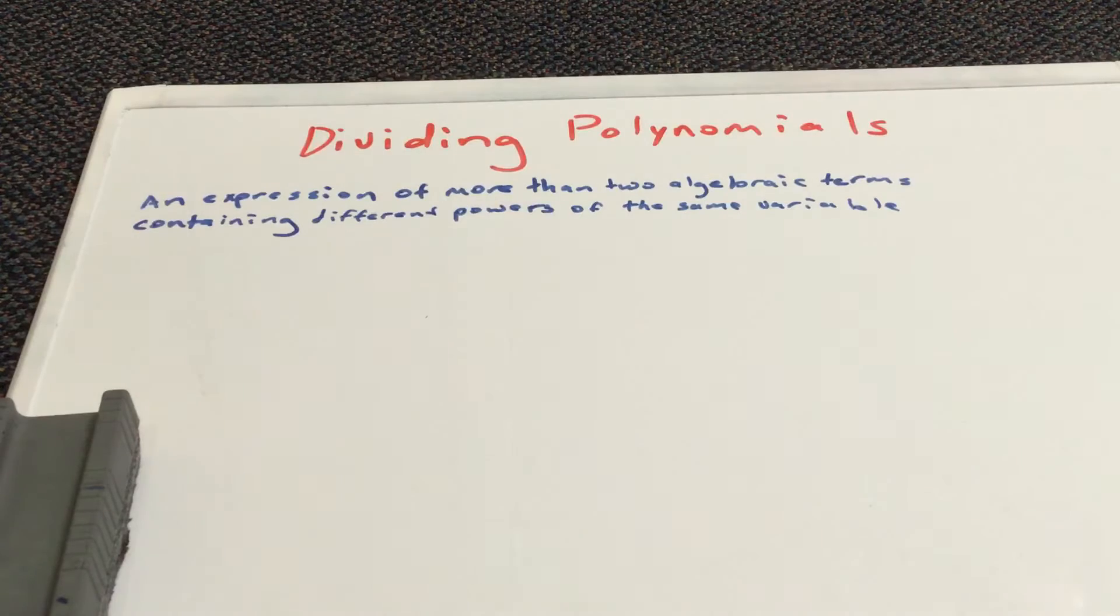A polynomial is an expression of more than two algebraic terms containing different powers of the same variable. So, what does this mean?